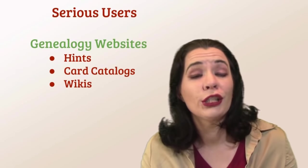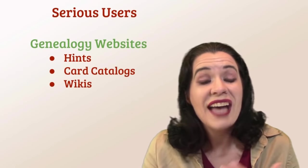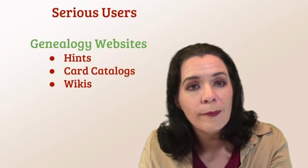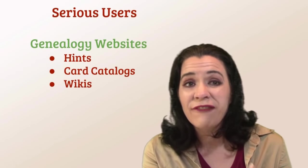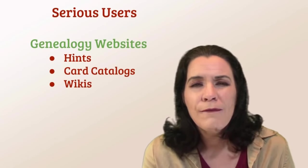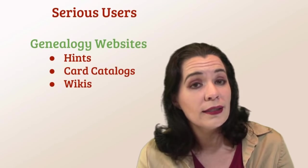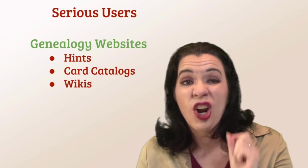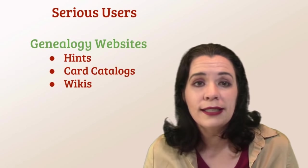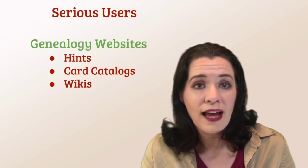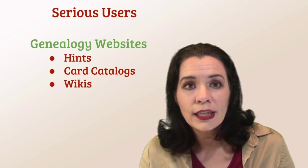Not every collection, especially on FamilySearch, has a searchable form. You can see the digital images but you have to browse through them much the same way as flipping pages of a book. The only way you'll get to those collections is through the card catalog. So when I'm really trying to dive deep into an ancestor's life and being serious, I will go investigate the card catalog.